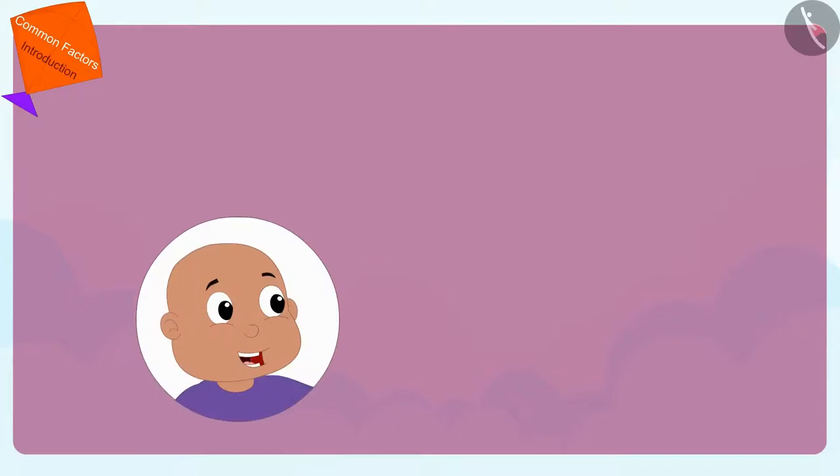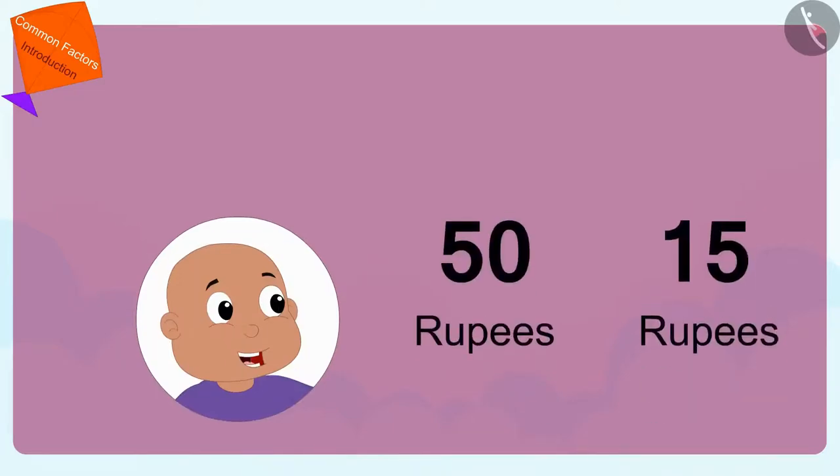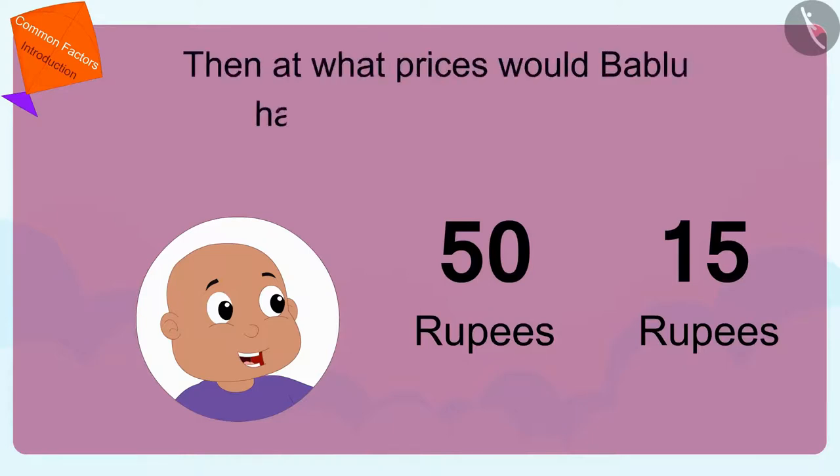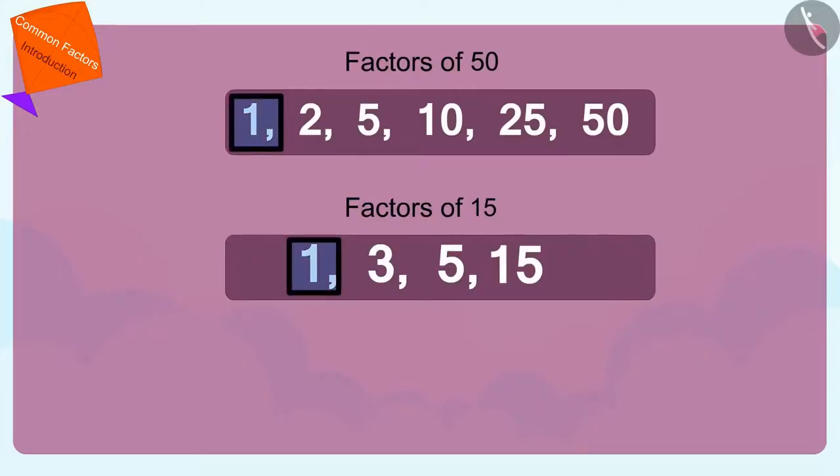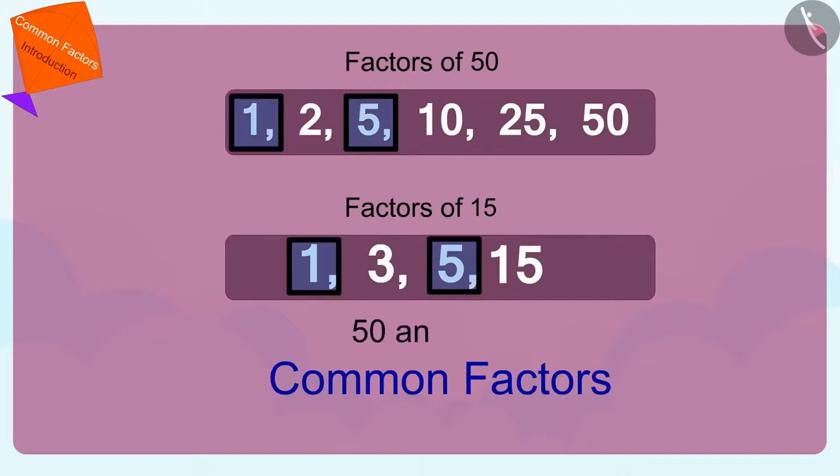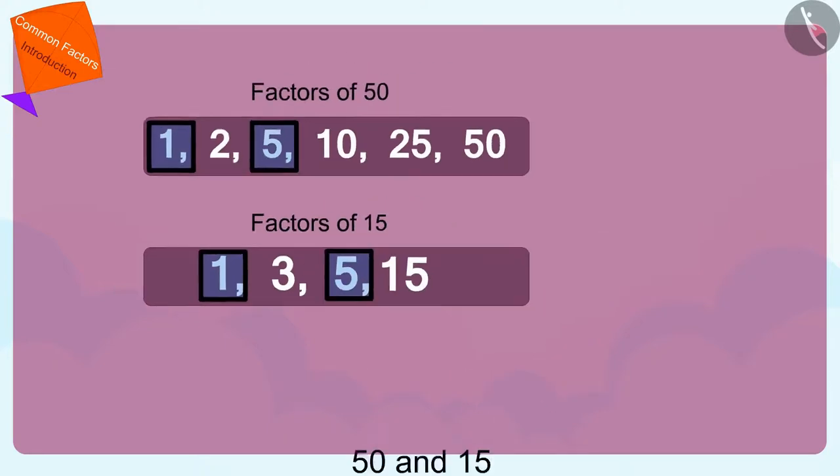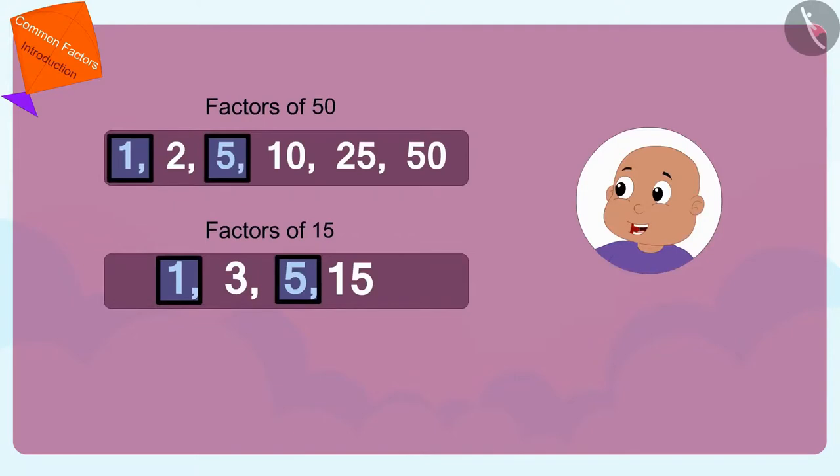If Babloo had 50 and 15 rupees, then at what prices would Babloo have been able to buy? If you want, you can pause the video and find the answer. 1 and 5 are the common factors of 50 and 15. So Babloo would have been able to buy ice creams for 1 or 5 rupees.